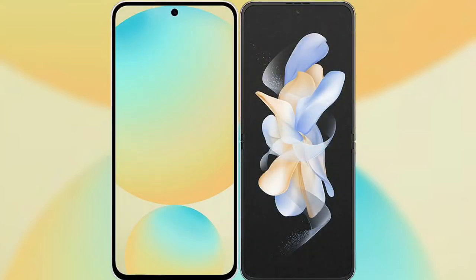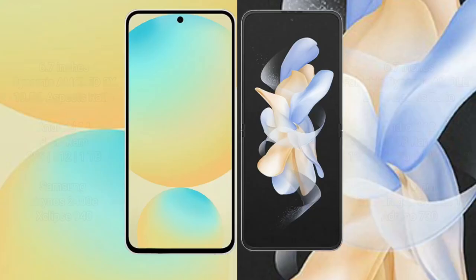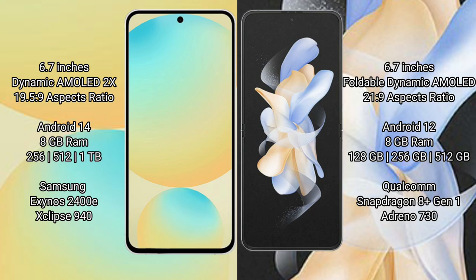I will compare the new Samsung Galaxy S24 FE with Samsung Galaxy Z Flip 4. Samsung Galaxy S24 FE has a 6.7 inch dynamic AMOLED display with aspect ratio 19.5:9. Samsung Galaxy Z Flip 4 has a 6.7 inch foldable dynamic AMOLED display with aspect ratio 21:9.